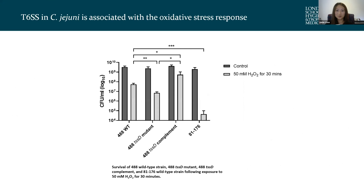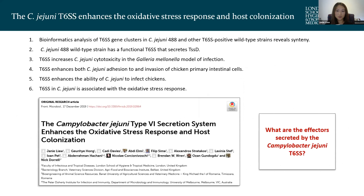During host colonization, Campylobacter is exposed to oxidative stress in the gastrointestinal tract, and the type 6 has been linked with the oxidative stress response in a number of other bacteria. To investigate whether this is also the case for the Campy type 6, we exposed the 4A8 wild type, TssD mutant, and A1176 strains to hydrogen peroxide. The 4A8 wild type was more resistant to oxidative stress killing compared to the TssD mutant and A1176, indicating that the type 6 is associated with the oxidative stress response in Campylobacter. These results were published in Frontiers in Microbiology.